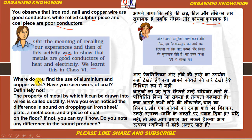Where do you find the use of aluminium and copper wire? Aap bata sakti ho ke aluminium aur taambe ki taar kahan use karti hai? Have you ever seen wires of coal? Kya aap ne kabhi coal ki jo wires hain jinsay electricity pass hoti hai, kya aap ne dekhi hain? Definitely not — bilkul nahi. The property of metal by which it can be drawn into wire is called ductility. Yaani jo metals hain like iron, copper, aluminium — unki jo property hai jis ki wajay se woh wire mein convert ho jate hain — that is called ductility. Yeh dhatumhon ka woh gun hai jisme unhe kheeench kar taron mein parivarthit kiya ja sakta hai. Aur yeh dhatumhon ka gun kehlataa hai: tanyata.